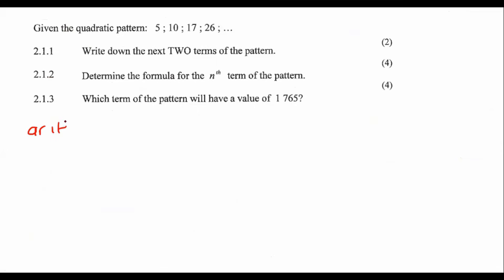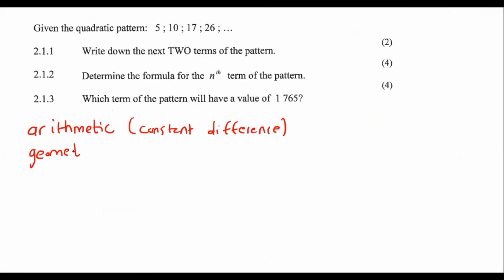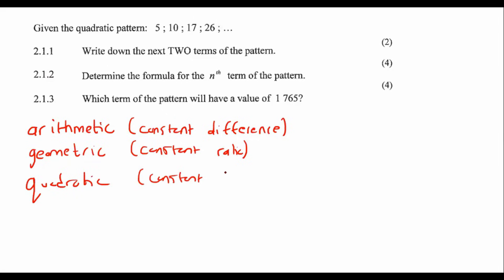There is arithmetic — this is the one that has a constant difference. Then you get geometric, which is a constant ratio. And then you get the one from grade 11, which is quadratic, and that's when you have a constant second difference.